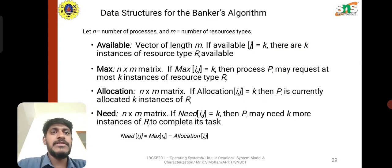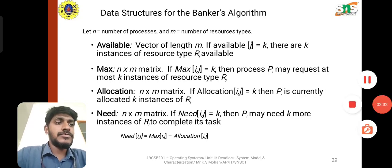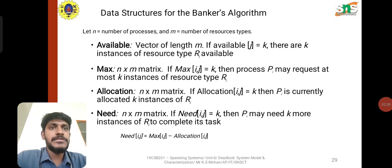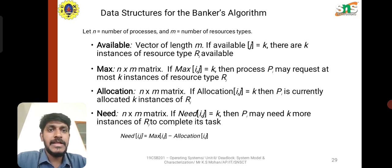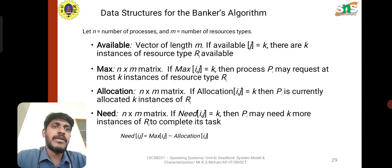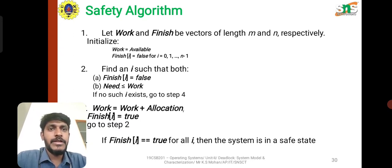For the Banker's Algorithm, the data structures we need are: Available, Max, Allocation, and Need. Let n equal the total number of processes and m equal the number of resource types.